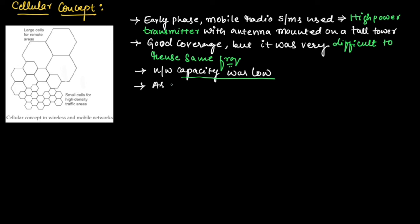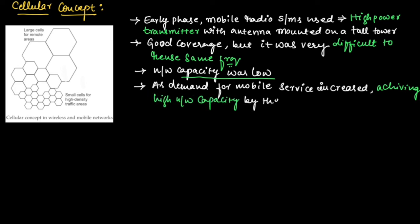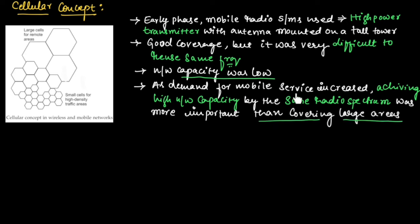As the demand for mobile service increased, achieving high network capacity using the same radio spectrum by frequency reuse became more important than covering large areas. The geographical area is divided into a small number of service areas known as cells.